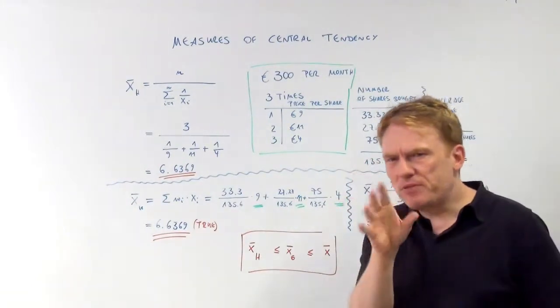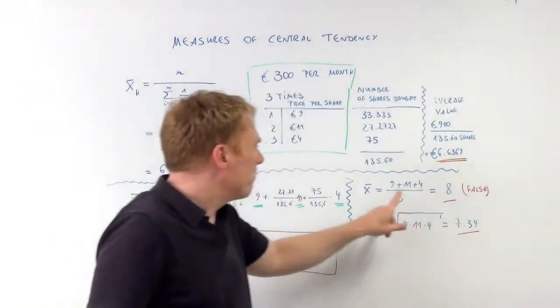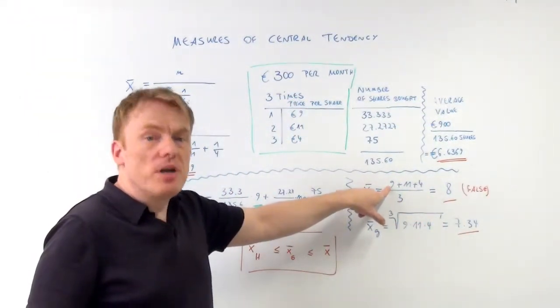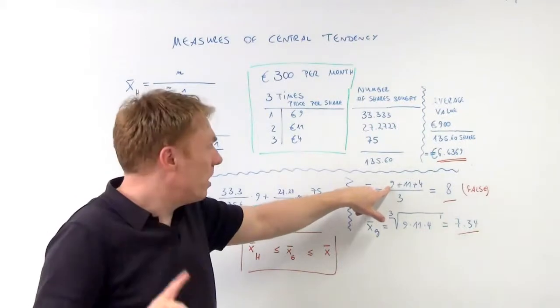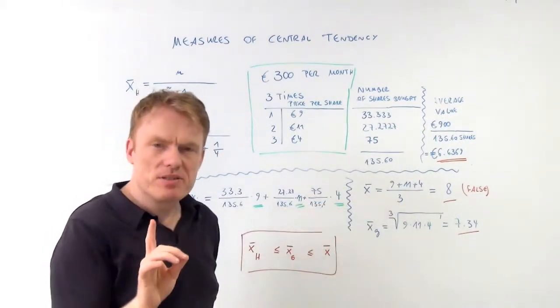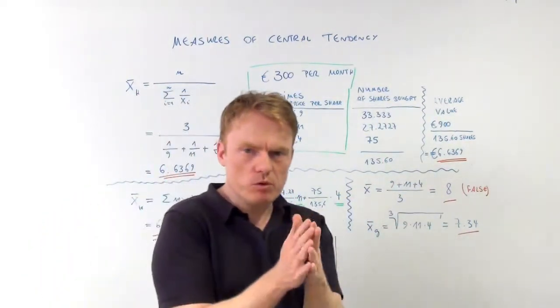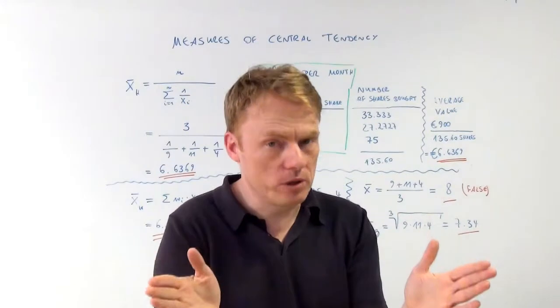If we do it differently, if we did it with the arithmetic mean, the arithmetic mean of just the prices, unweighted, 9 plus 11 plus 4 divided by the sample size, divided by 3, gives us 8 euros per share, which is totally false.